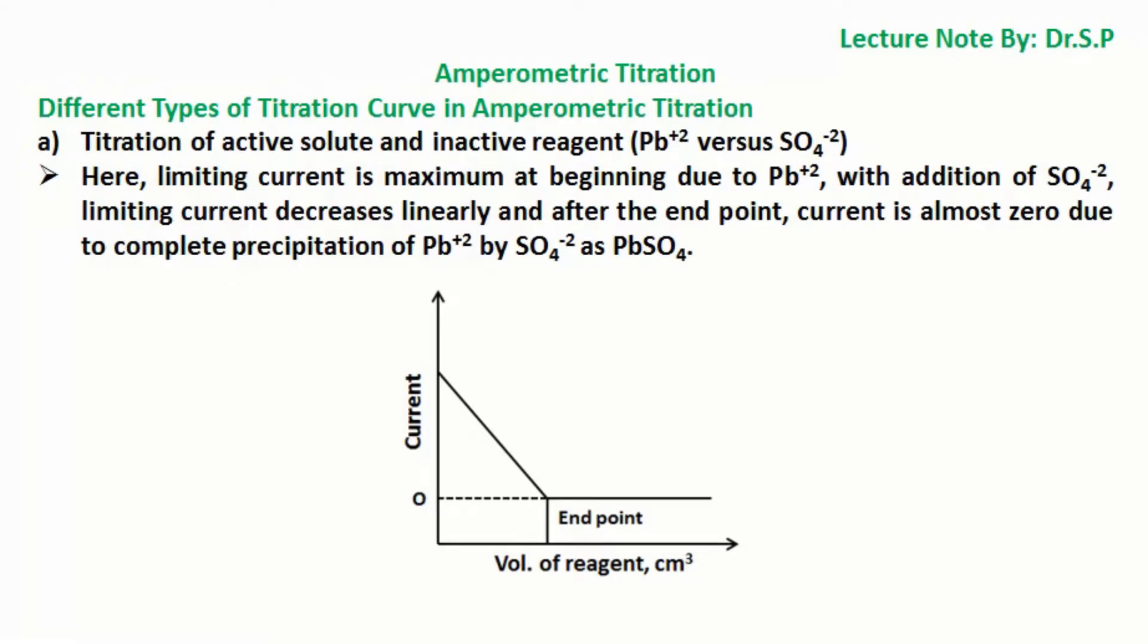Different types of titration curve in amperometric titration. Titration of active solute and inactive reagent, that is lead ion Pb²⁺ versus sulfate ion SO₄²⁻. Here, limiting current is maximum at beginning due to lead ion Pb²⁺. With addition of sulfate ion SO₄²⁻, limiting current decreases linearly and after the end point, current is almost zero due to complete precipitation of lead ion Pb²⁺ by sulfate ion SO₄²⁻ as lead sulfate PbSO₄.